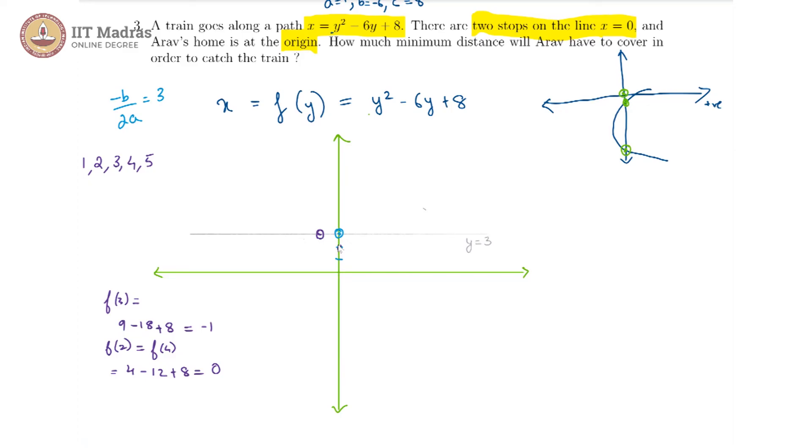We now have our roots, we know that at 2, this point, and at 4 our curve is going to intersect the y axis.